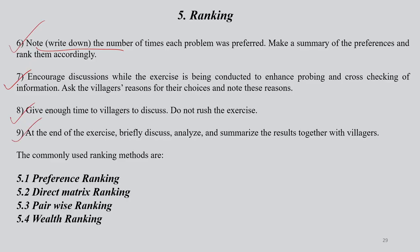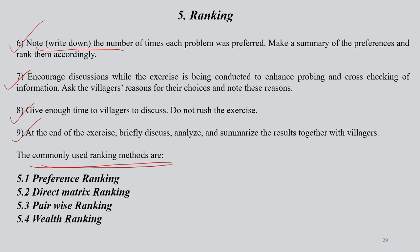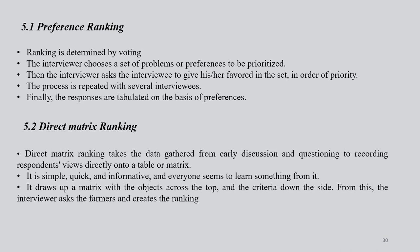At the end of this exercise, you should briefly discuss, analyze, and summarize all the results together with the villagers. It should not be carried out away from villagers — the best way is to do it with the villagers, in front of them. The four commonly used ranking methods for PRA exercises are: preference ranking, direct matrix ranking, pairwise ranking, and wealth ranking. I will discuss each one of these ranking methods one by one.